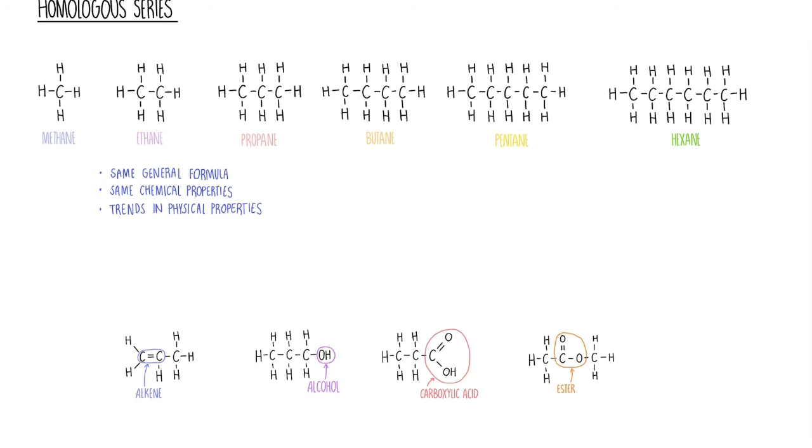The last one is the esters. The functional group is COO, carbon double bound to an oxygen, single bound to an oxygen. These have a slightly more complicated naming system that we'll cover on a separate video.